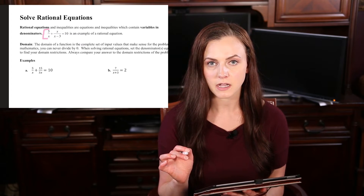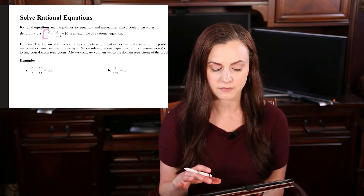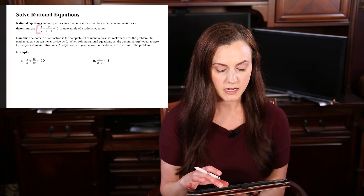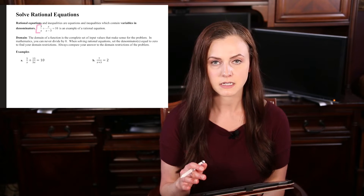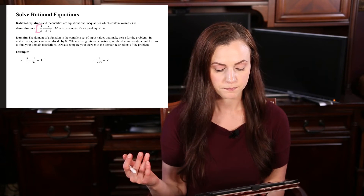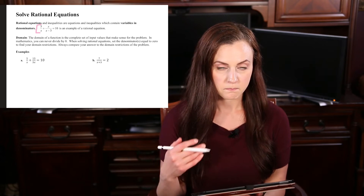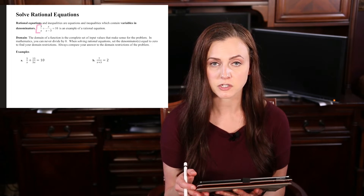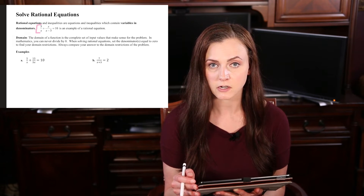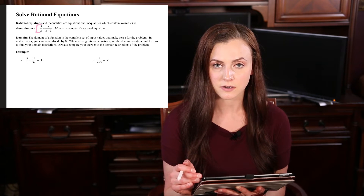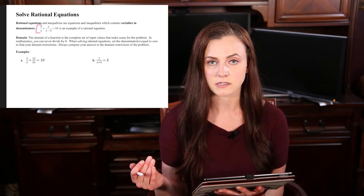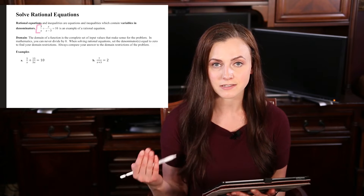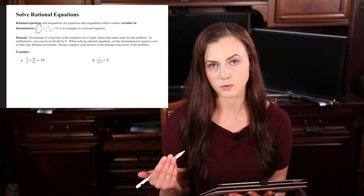You need to be careful when it comes to rational equations because we have to deal with domain restrictions. The domain of a function is the complete set of input values, but you can't divide by 0. So whenever you're dealing with a rational equation, you need to look at the denominator and see what would make that 0 and write down those domain restrictions, because you're going to need to compare your answer against those domain restrictions for each question.